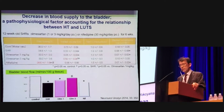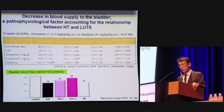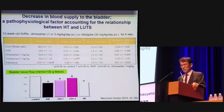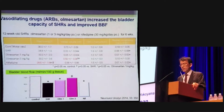Decreased blood supply to the bladder is one of the pathophysiological factors accounting for the relationship between hypertension and LUTS. Compared with Wistar-Kyoto rats, SHR revealed low voided volume. Angiotensin II receptor blocker (ARB) olmesartan increased voided volume; however, nifedipine did not increase bladder blood flow. Therefore, ARBs increased the bladder capacity of SHR and improved bladder blood flow.